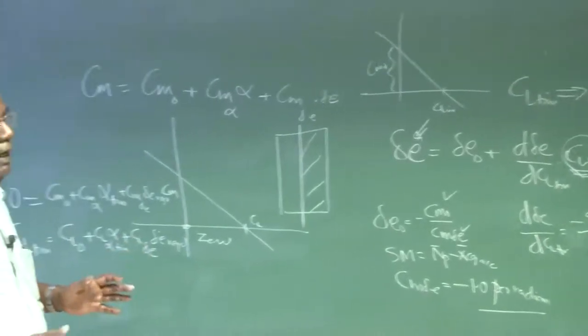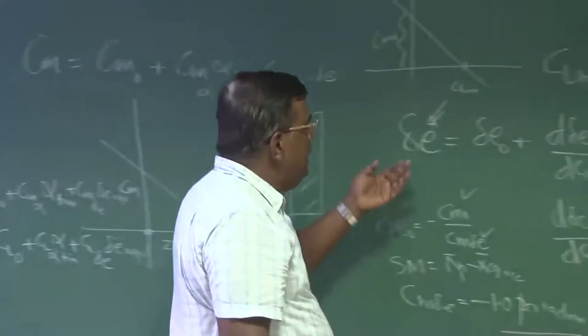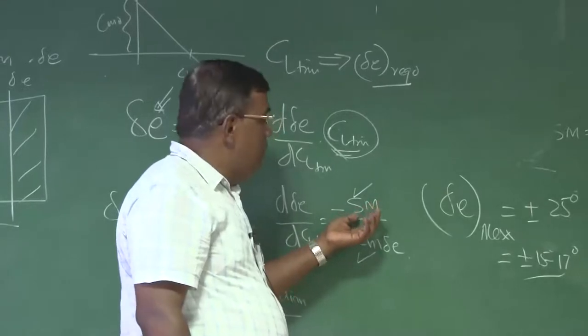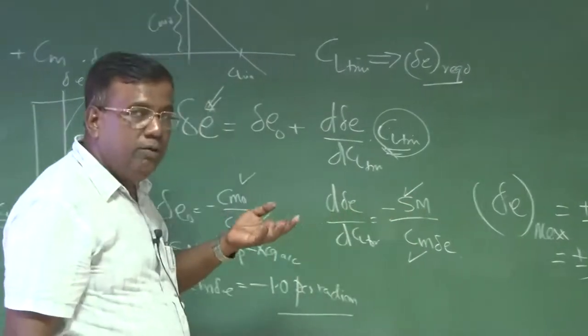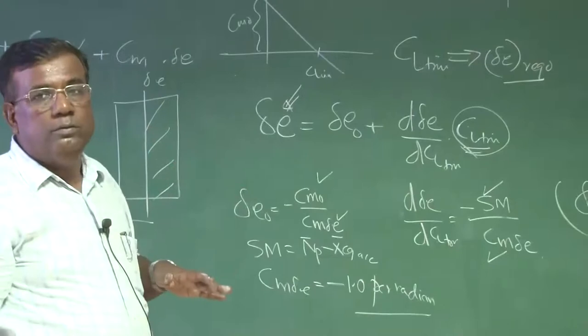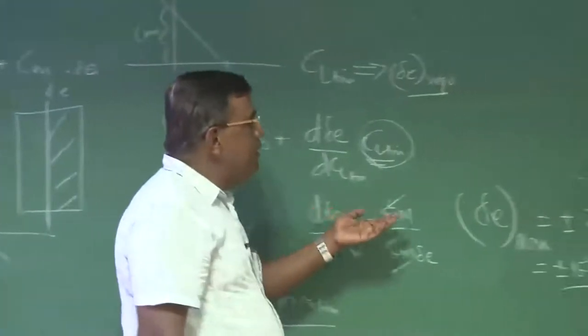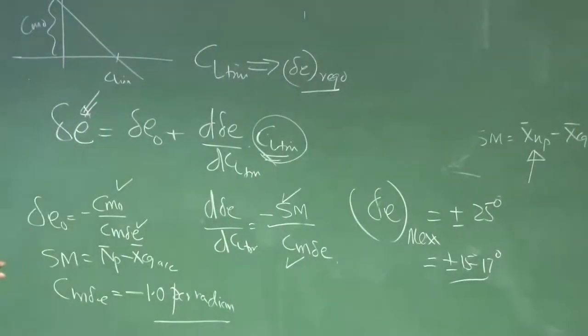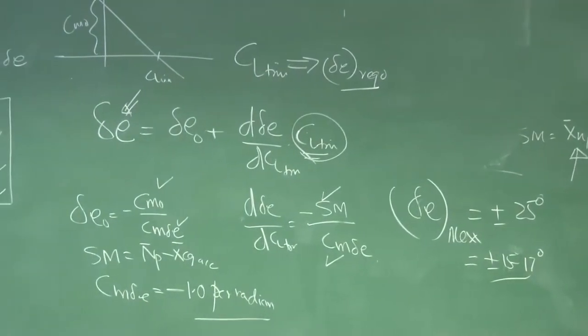And you can very well see that this delta E requirement will change with respect to the static margin. That means, as I am making it less and less stable, say from 15 percent, if I make it to 10 percent, the delta E requirement will go down. Naturally, less stable means less effort. If I am increasing the static margin, that is I am taking the CG forward and forward, then delta E required will become pretty high. So we have to see this, whether I have got that much of bandwidth in elevator or not, with the CG travel.